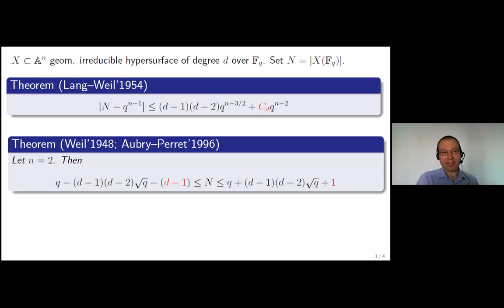Now, in the case of curves, when X is a curve, N is equal to two. The foundational result is due to Weil for singular curves and Aubry-Perret for possibly singular curves. The bound is as follows: you can see that C_D can be taken to be D minus one for the lower bound and one for the upper bound. Next, I will summarize what is known about explicit Lang-Weil bounds in the higher dimensional case, when N is greater than two.